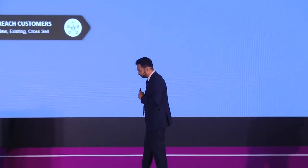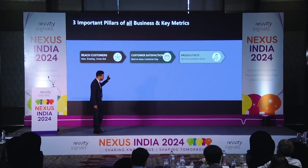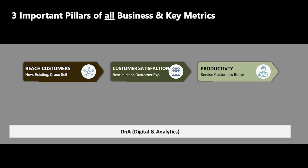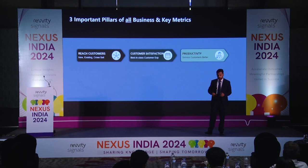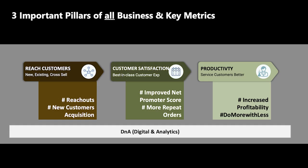I look at businesses in three buckets. First is reach out to customers — I call it hunting. Second is customer satisfaction — in a way, farming, where I continue to cultivate and harvest. Third is productivity. Productivity is where all these initiatives on automation, digital transformation, and doing more with less come into play. I track metrics closely with my CEOs: how many reach-outs, what is our CAC, how do we improve our NPS, how many repeat orders, and how are we doing more with less.